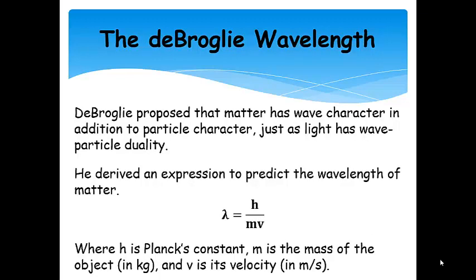Now, de Broglie proposed that matter had wave character in addition to particle character, just as light has wave-particle duality. So, he derived an expression based on Einstein's work to predict the wavelength of matter. And so, here, this is what he came up with. So, the wavelength of some matter is equal to Planck's constant divided by mass times its velocity. So, this is the mass of the particle, velocity of the particle, and Planck's constant. And we get a wavelength in meters.